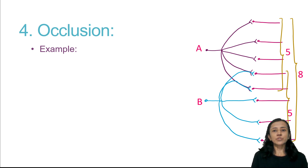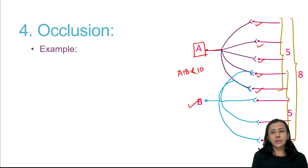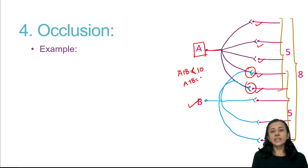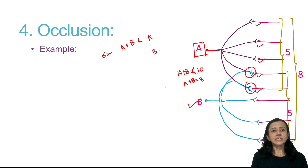Fourth is occlusion. When stimulating presynaptic terminal A, five postsynaptic terminals are stimulated. When stimulating B, again five postsynaptic terminals are stimulated. When stimulating A plus B together, you might expect 10, but the response is less — equal to 8 — because two terminals are common for both. Response of simultaneous stimulation of two presynaptic terminals is less than the sum total of separate stimulation. That is occlusion.